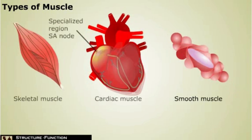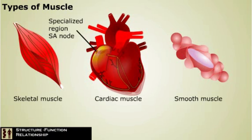The structure of each type of muscle helps it carry out the specific functions it must perform. Our muscles allow us to do many things including move our limbs, pump blood through our body, and move food through our digestive tract.